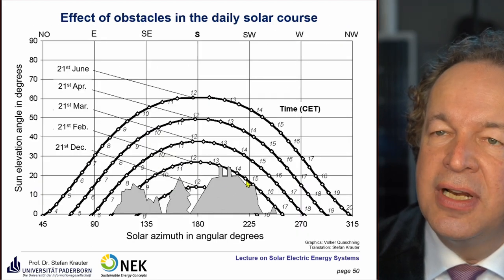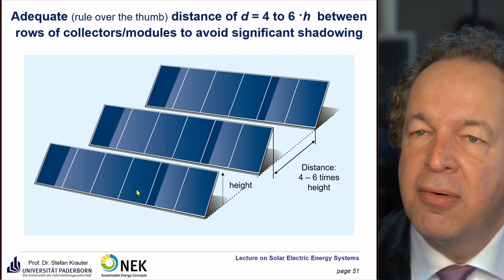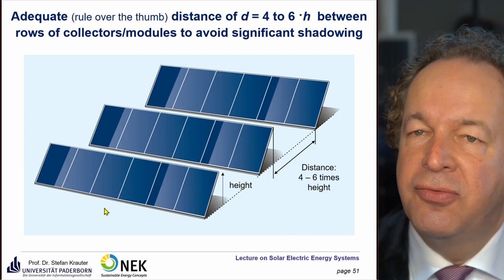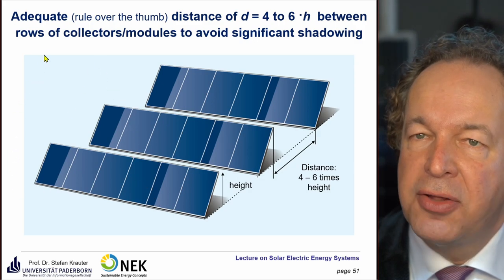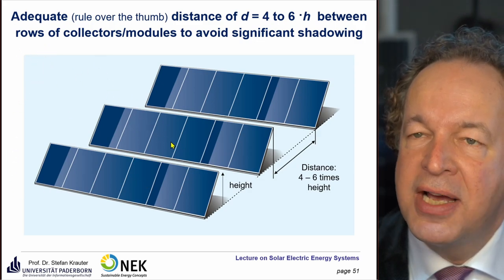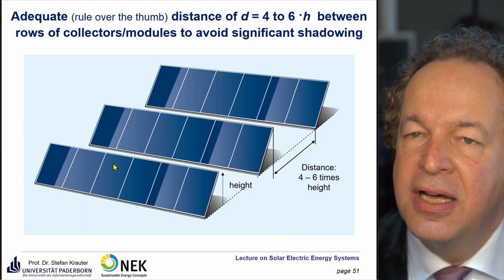There is also auto-shadowing to consider. For example, in a large PV generator with several rows, shadowing is not critical in summer because the sun is rather high — about 60 degrees above the horizon. But in winter, when the sun is rather low, for example on the 21st of December, problems arise.